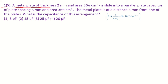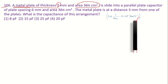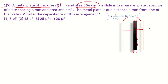In this question it is said that there is a metal plate of 2 mm thickness and its surface area is 36π cm². This plate is slid into a parallel plate capacitor of plate spacing 6 mm. There is a parallel plate capacitor and the space between the two plates is 6 mm, with the same area as the metal plate.